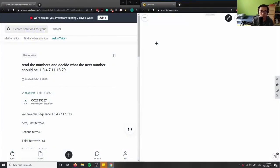So it says read the numbers and decide what the next number should be. So you have a pattern of some sort. You can think of it as a sequence, series and sequences.